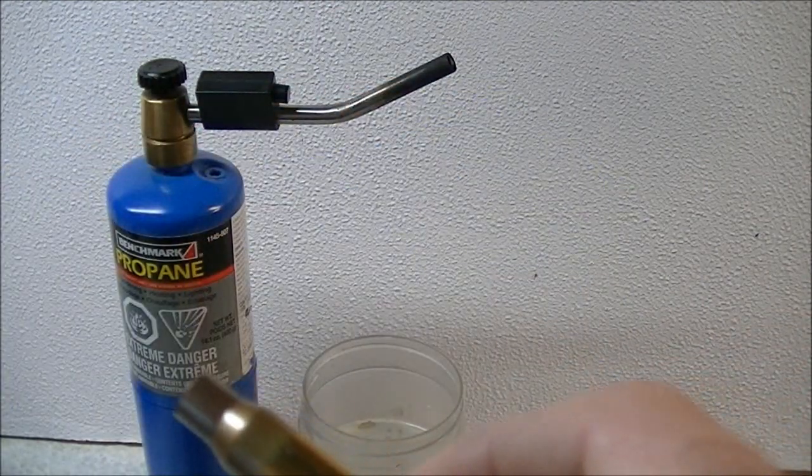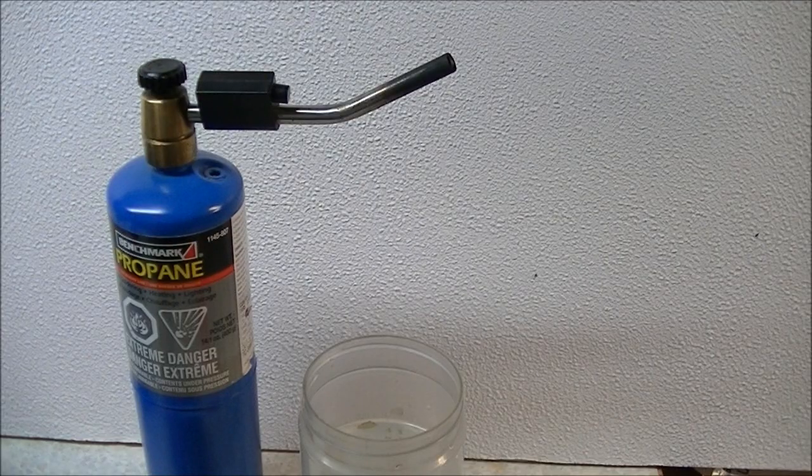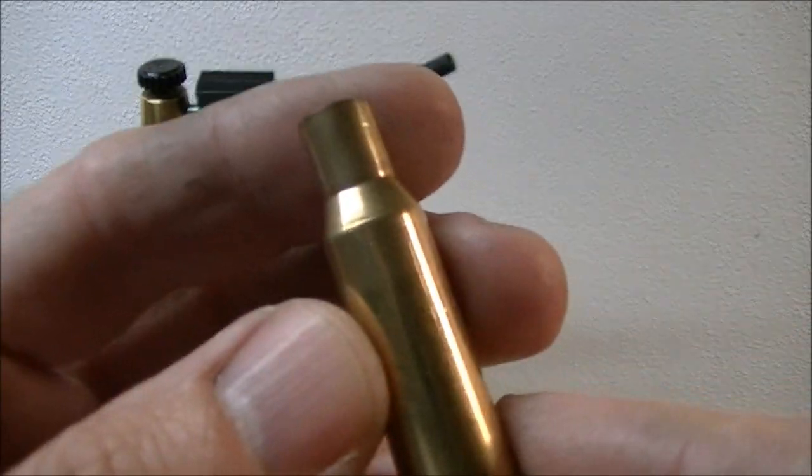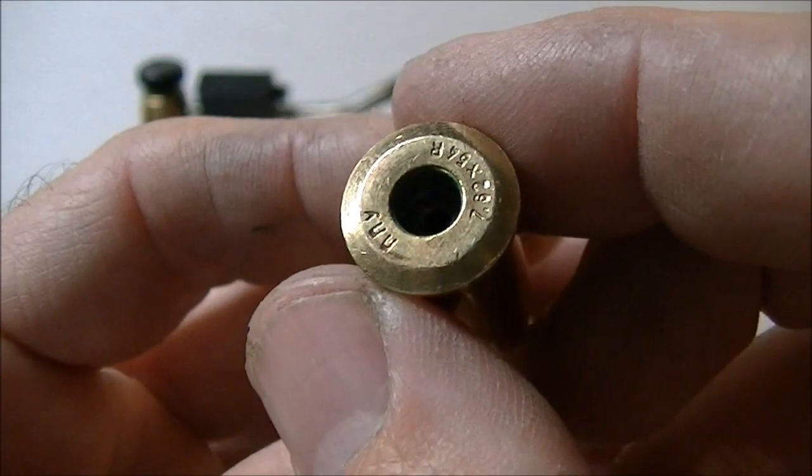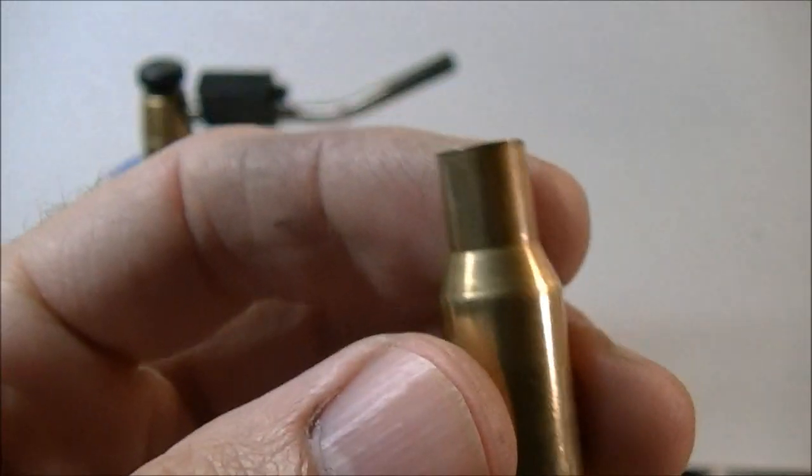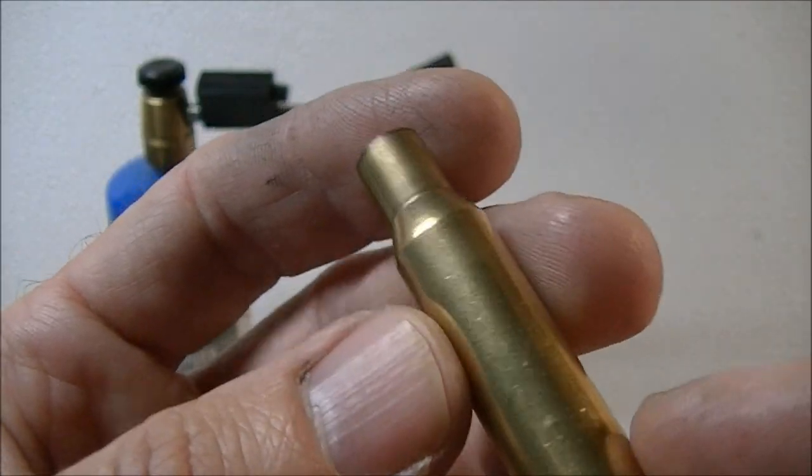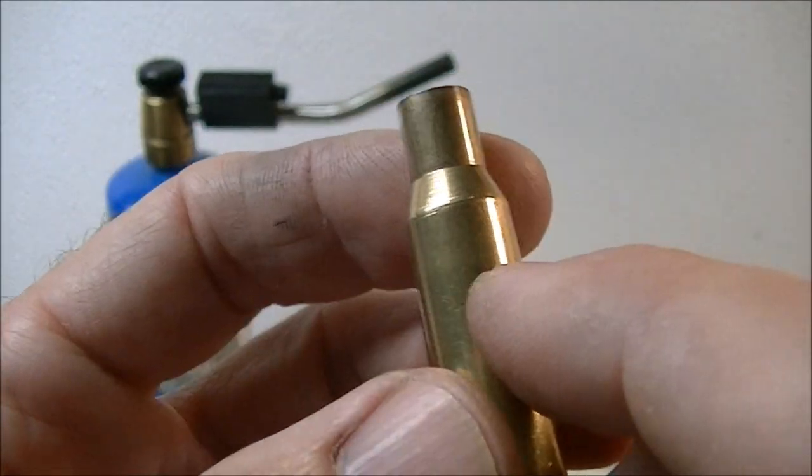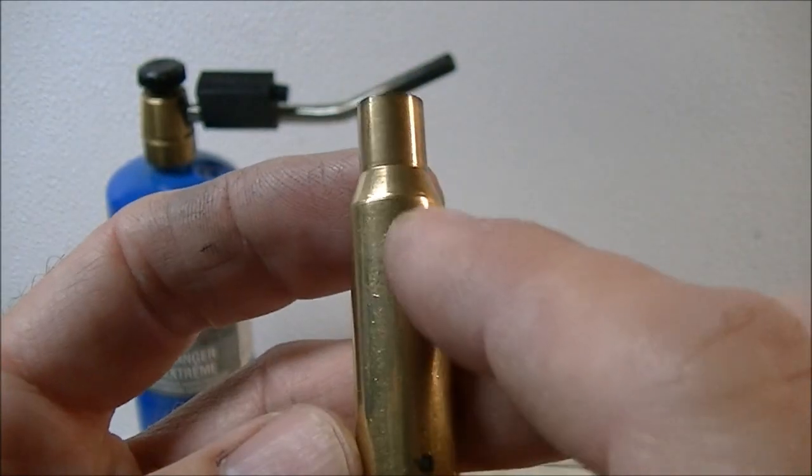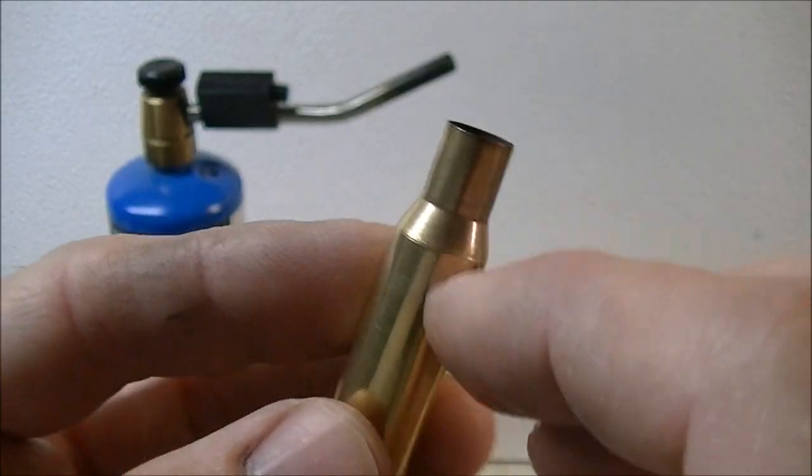We're going to look at some 7.62x54 brass that I have here, and this has been fired and sized a number of times. This is Privy Partizan brass with that Cyrillic headstamp. I'm not sure exactly how many times this has been loaded and fired since the last time it was annealed, but it's also been polished a number of times, and polishing in a case tumbler will remove the color from the heat treating process.